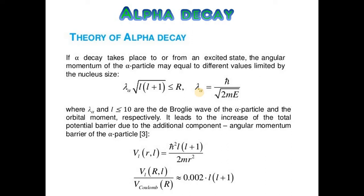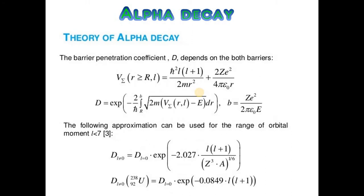It leads to the increase of the total potential barrier due to the additional component, the angular momentum barrier of the alpha particle. The barrier penetration coefficient D depends on both barriers. The following approximation can be used for the range of orbital moment.